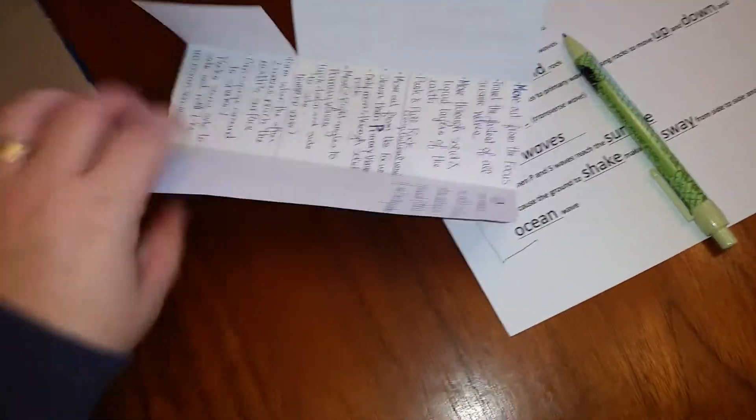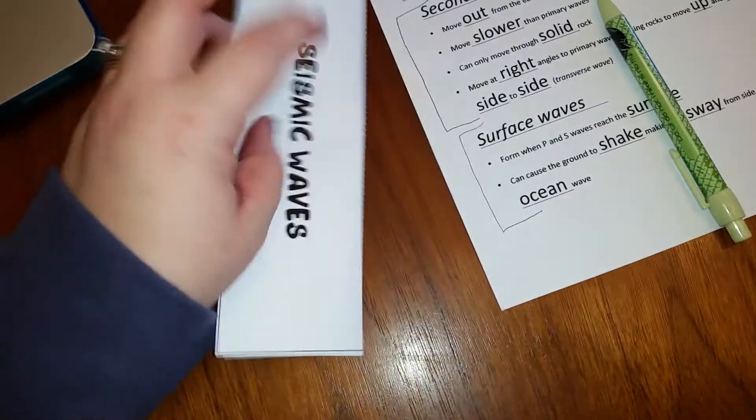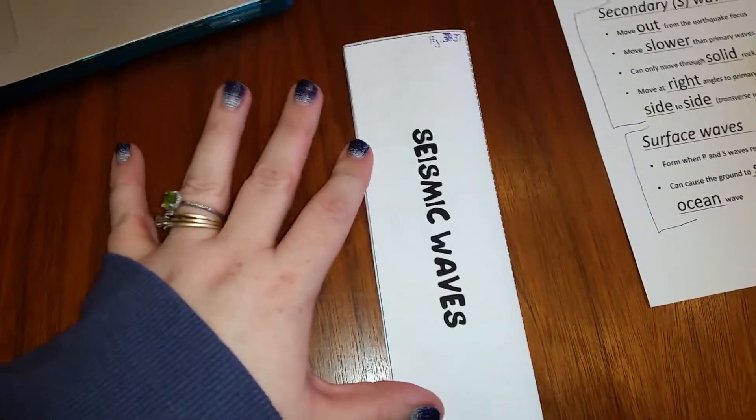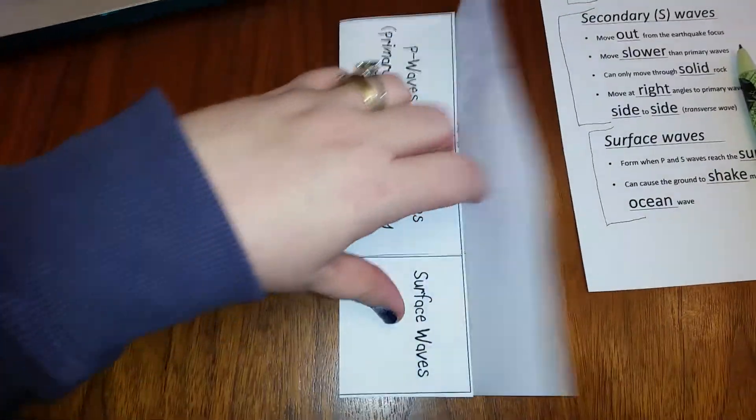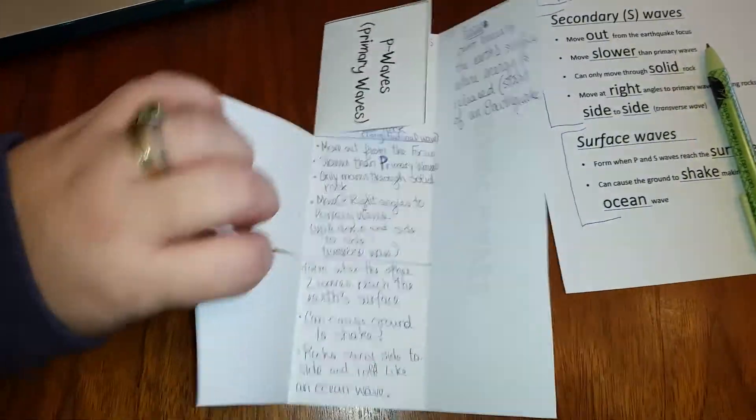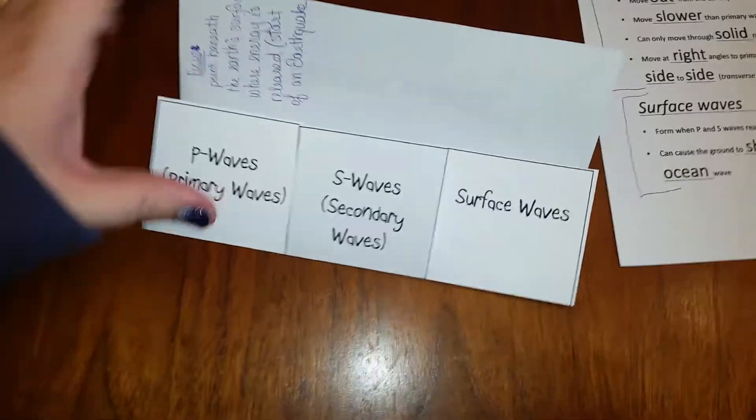Once you've completed your foldable and it looks like this, you're going to glue it just like that into your notebook. So the notebook is going to be here. That will fold out. These will fold down. It will not fit if you try to put it straight across the page. So please don't do that because we don't need a bunch of extra messy glue stuff going on.